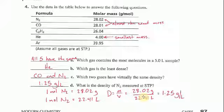So 28.02 grams divided by 22.41 liters. I get 1.25 grams per liter.